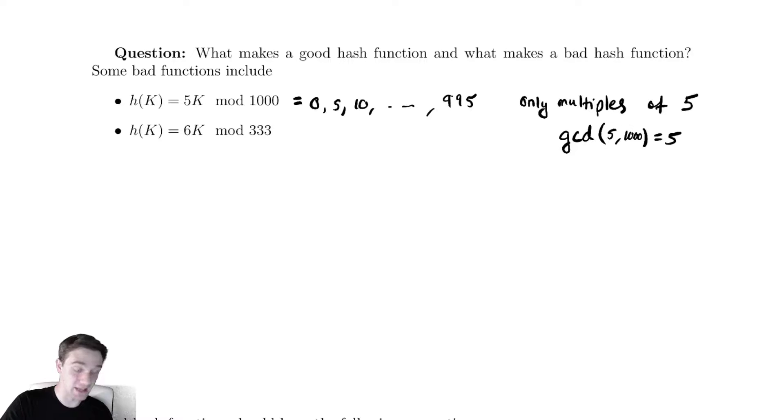Similarly, our next example is going to give us only multiples of 3: 0, 3, 6, up until 330. And this will happen because the GCD between 6 and 333 is 3.